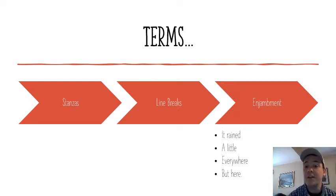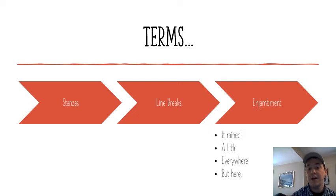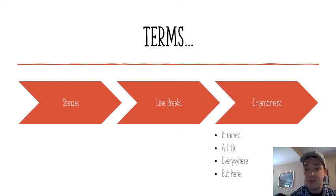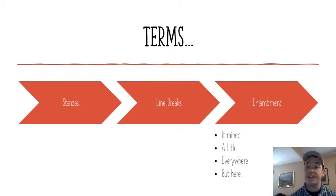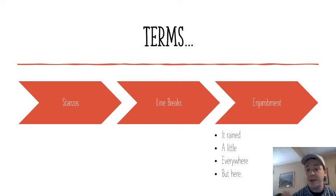And that's directly related to enjambment — enjambment is when you continue a phrase onto the next line of poetry with no commas, no periods, no change in punctuation. The poem 'It Rained a Little Everywhere But Here' shows enjambment where the lines are broken where the poet felt they needed to be, to sound or feel a certain way. You don't get an entire sentence or phrase written out; it's all one continuous phrase broken the way the poet wants it to look and feel on the page.